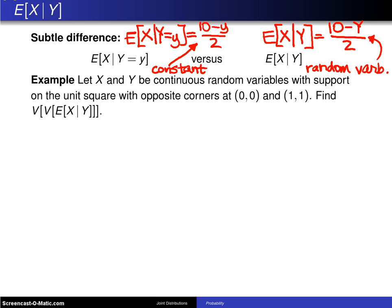So here is an example with the expected value of X given Y. Let X and Y be continuous random variables with support on the unit square with opposite corners at (0,0) and (1,1). So here is a picture of that particular support. Here is script A, unit square. Now you have no idea what the joint probability density function is over that unit square. You just know that that's where the random variables are defined.